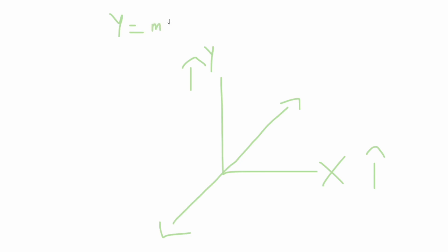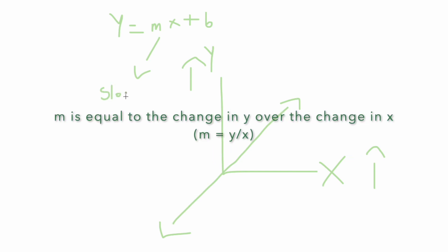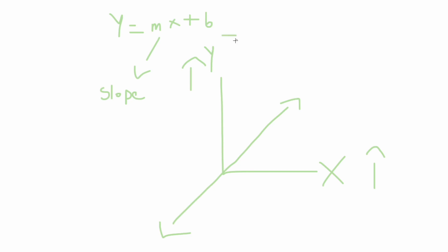To create an equation for a certain linear line, we use the equation y equals mx plus b. When an equation is in this format, we say that it is in slope-intercept form, where m is the slope and b is the y-intercept. You can really just think of m as how much it is moving by and think of b as the beginning number.